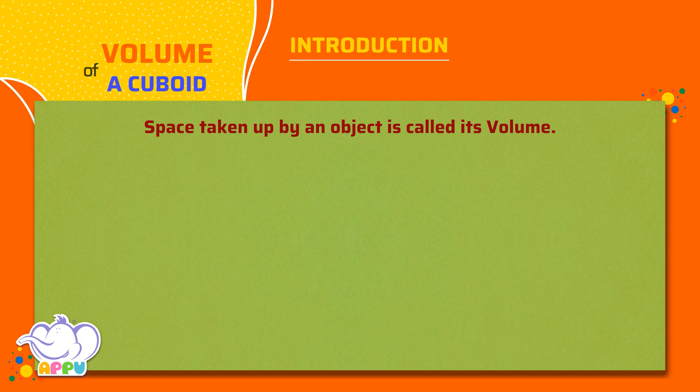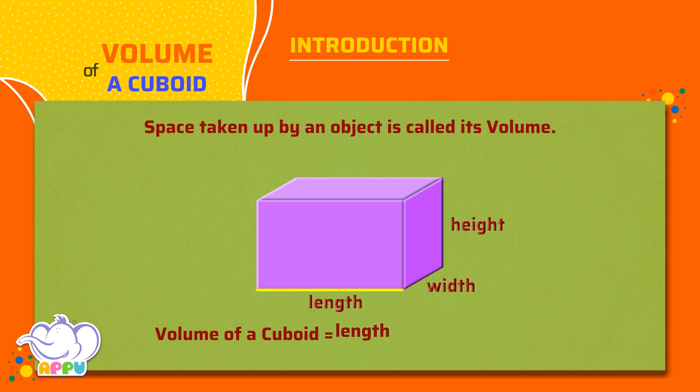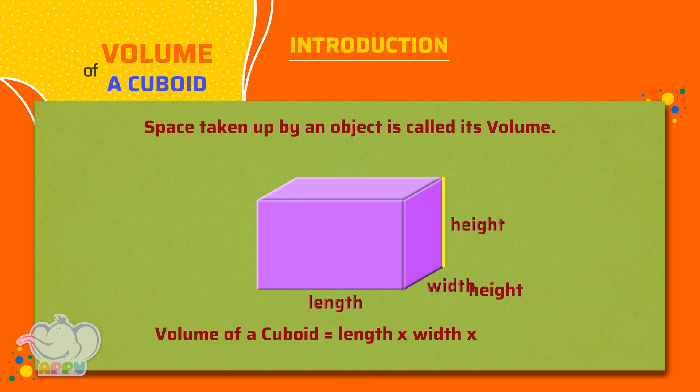It's easy to find the volume of a cuboid using a formula. We first find the length, width, and height of the cuboid and multiply them. Volume of a cuboid equals length times width times height.